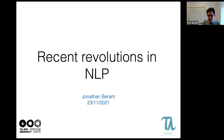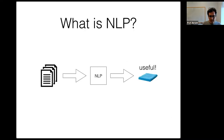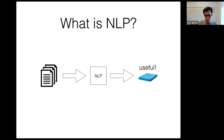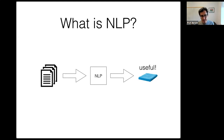I want to start by pointing out what natural language processing is. NLP is the field of science and engineering that focuses on building systems that take as input some text — not speech or audio, but characters, letters, and words — in a natural language like English, Hebrew, Hindi, or Chinese. The output is something useful that you would like to get out of reading some text. One application is machine translation: given a sentence in English, you can translate it to another language.